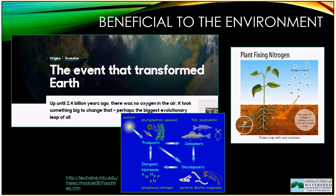Cyanobacteria are a very important component of the environment. As organisms that conduct photosynthesis, they take sun energy, use it to grow, and as they become abundant they are consumed by other organisms within the food web, transferring that sun energy throughout the food web. Cyanobacteria are believed to have been the first organism to have figured out how to do photosynthesis. As a result, they became very abundant — the ability to do photosynthesis gave them a strong competitive edge and they became very abundant.